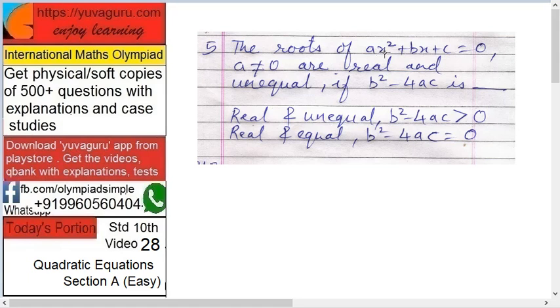The roots of equation ax square plus bx plus c equals to 0, where a not equal to 0, are real and unequal if b square minus 4ac is greater than 0. If real and equal, b square minus 4ac equals to 0.